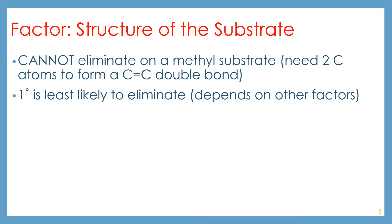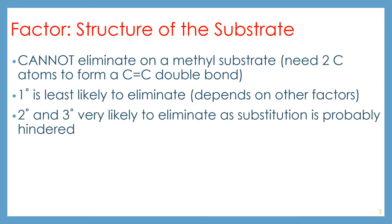Primary is the least likely to eliminate. Secondary and tertiary are very likely to go through elimination, because the substitution is most likely hindered. And a secondary or tertiary substrate will end up with a more substituted alkene.